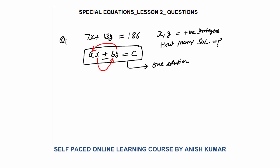So in this case also, we need to find the positive integer solution. I will find just one solution. No need to try to find one solution by hit and trial method. Now, simplify this equation. We can say 7x is equal to 186 minus 13y. What would be x? x equals 186 minus 13y divided by 7.